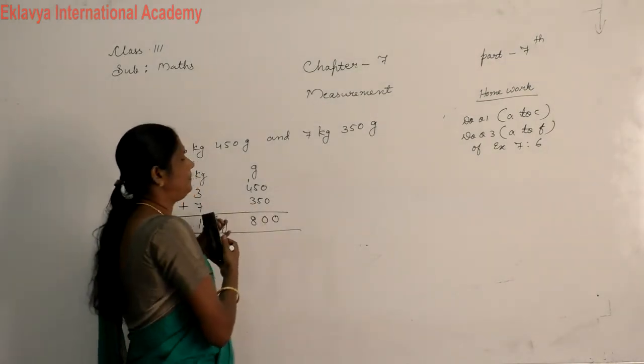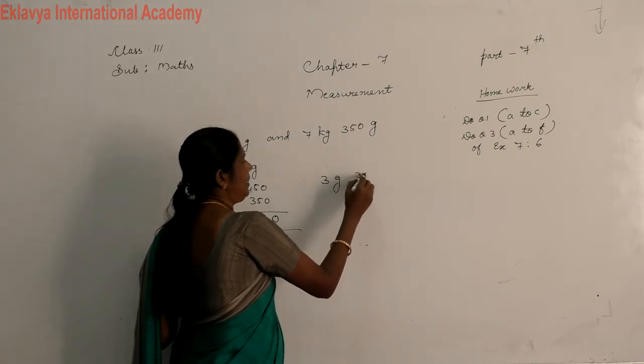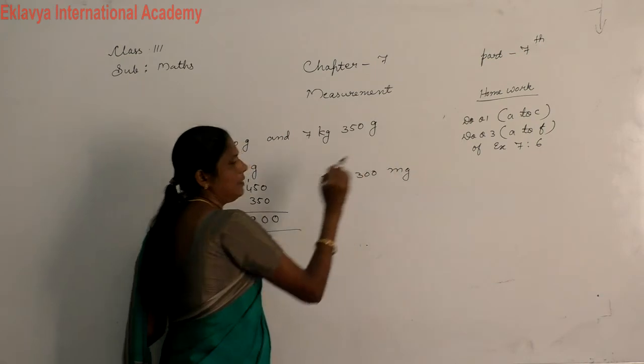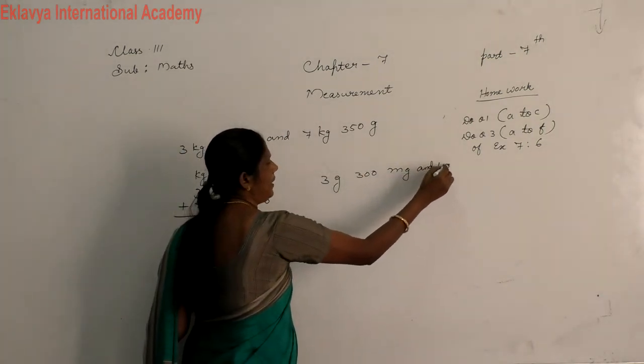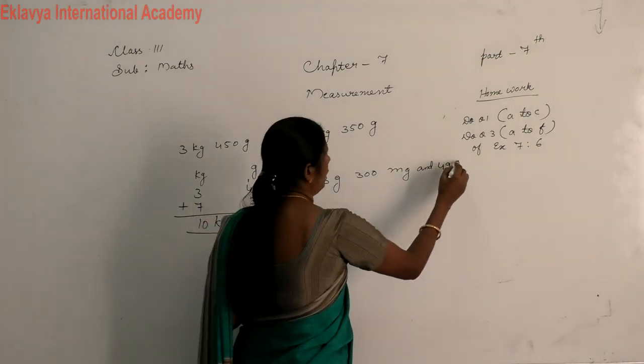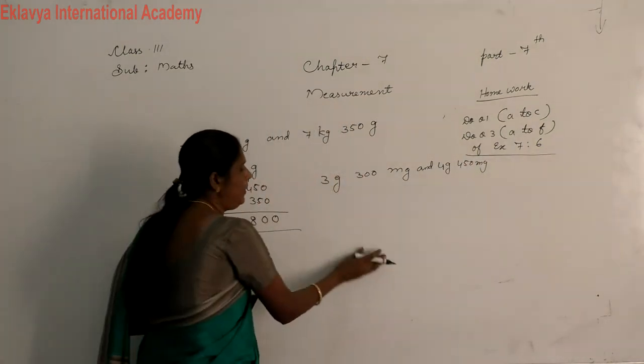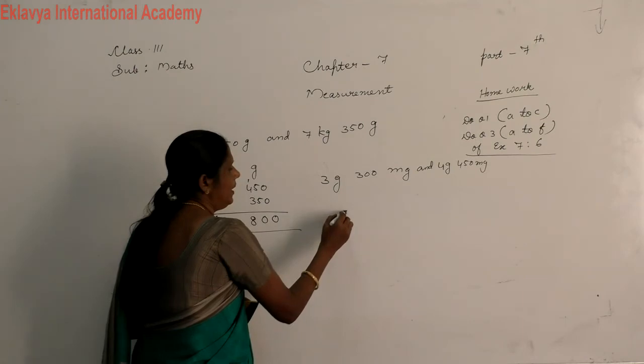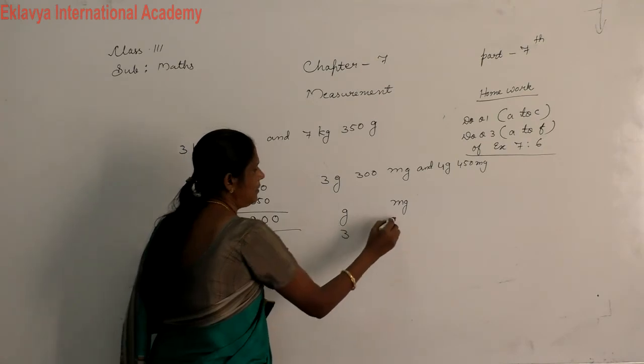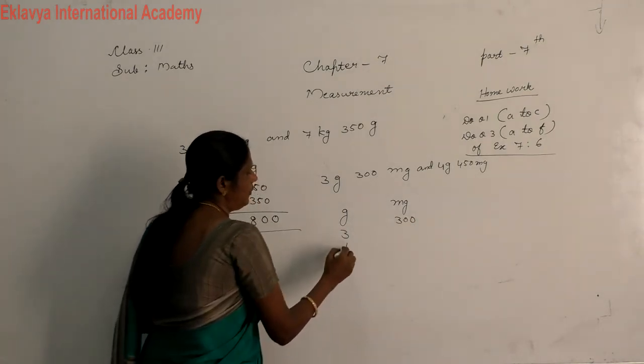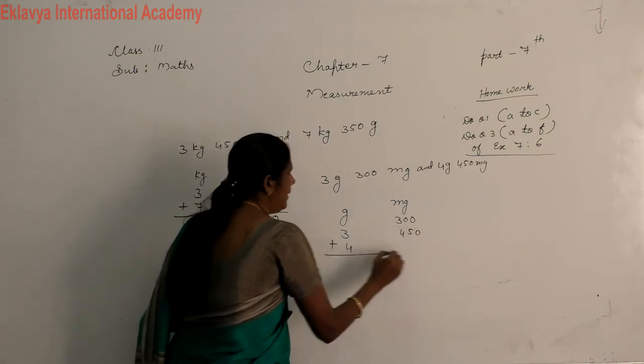More question. 3 gram, 300 mg, then and 4 gram, 450 mg. Again you make two columns, gram and mg. 3, 300, then 4, 450. Then add this number.